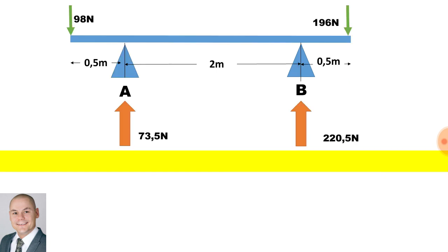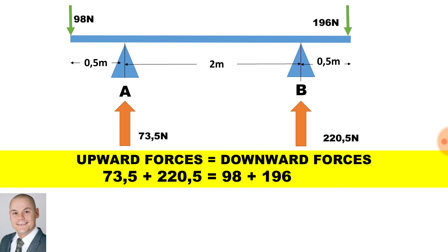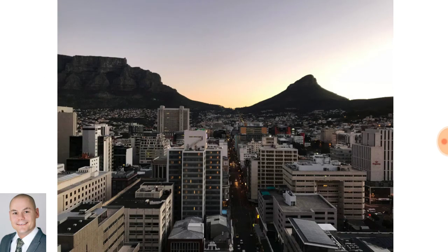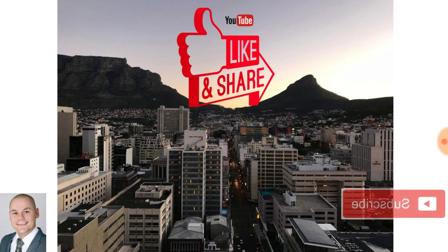Just to recap: we have a beam resting on two supports, and the upward forces must be equal to the downward forces. The upward forces of 73.5 plus 220.5 must be equal to the downward forces of 98 plus 196. Thanks again for watching these videos — don't forget to like, share, and if you haven't done so already, please hit that subscribe button. Thank you.